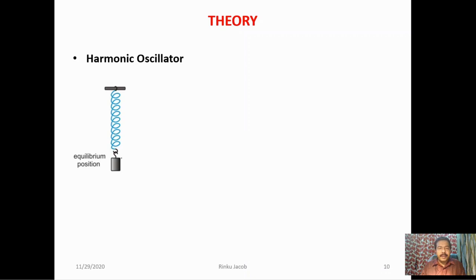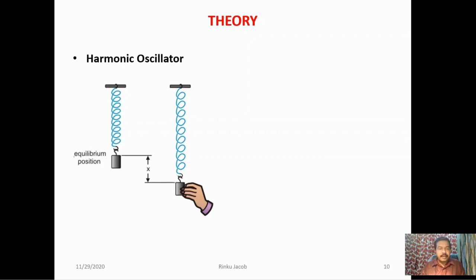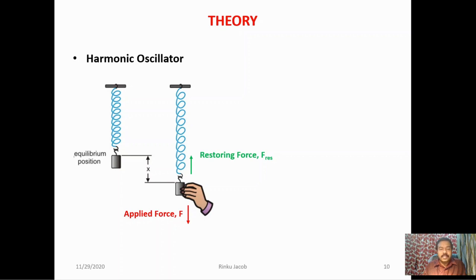Initially the mass is at equilibrium position. When we apply an external force F, the mass is displaced by X from its equilibrium position, and a restoring force acts against the displacement. In classical mechanics, if the restoring force F_restore is proportional to displacement X, the system is called a harmonic oscillator. If F is the only force acting, the body is a simple harmonic oscillator. The restoring force is given by F_restore = -KX, where K is the spring or force constant.